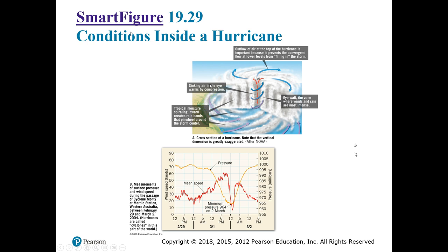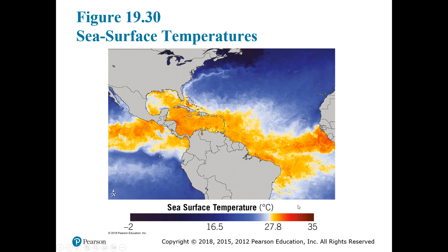The textbook has a figure slicing through a hurricane to show what's happening inside, including what happens to surface pressure and wind speed as a hurricane passes. Pressure totally drops as the hurricane passes, then rises again afterward. The lowest pressures ever recorded on Earth have been at the center of a hurricane. Sea surface temperatures drive hurricanes — very warm seas off the coast of Africa drive formation and movement of hurricanes in the Atlantic Ocean Basin.